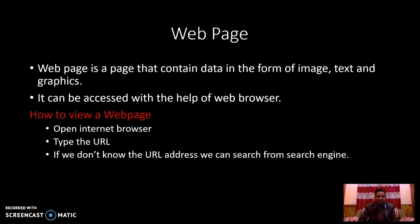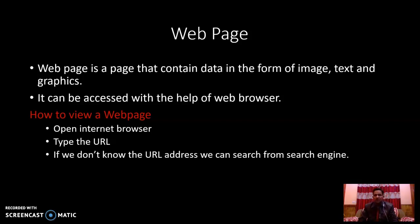Web page is a page that contains data in the form of images, text, or graphics. It can be accessed with the help of a web browser. To view a web page: first, open the internet browser; then type the URL address like google.com. If you don't know the URL address, you can take the help of a search engine — write the company name on Google and Google will provide the web address of that particular organization.